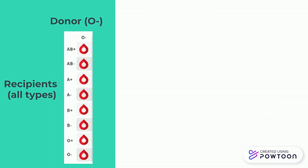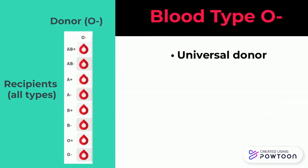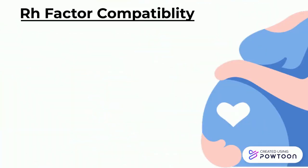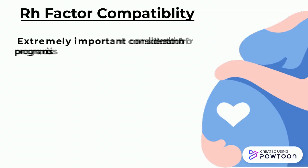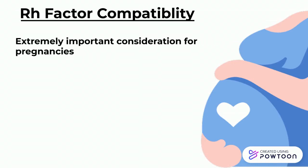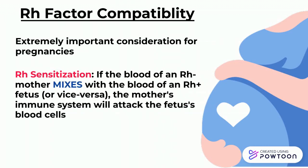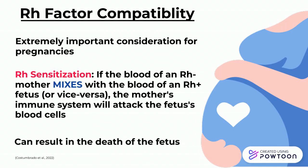Certain blood types are in extremely high demand for emergency situations. An example of this is type O negative, which is known as the universal donor since it has no A, B, or RH antigens and is unable to trigger the immune system in any patient despite their blood type. RH factor compatibility must also be taken into heavy consideration, especially for pregnancies. A phenomenon called RH sensitization may occur where if the blood of an RH negative mother is carrying an RH positive fetus or vice versa, the mother's immune system will produce antibodies that will attack the fetus's blood cells, potentially resulting in the death of the fetus.